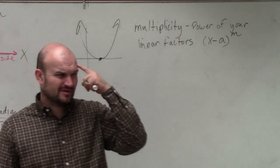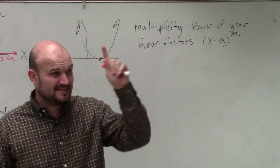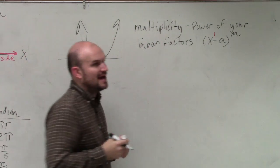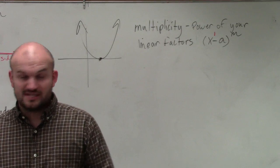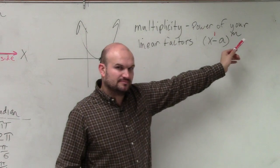And you might say, what do you mean, first of all, linear? Well, remember, guys, when we're talking about classifying, linear means it has a power of 1, right? You guys can see this factor, my variable x, has a power of 1. So that's a linear factor. M represents our multiplicity.